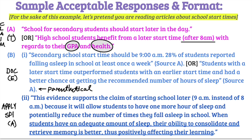If you have a document that supports the GPA claim and another document that supports the health claim, those are your two documents needed to get the points. For evidence using the documents: 'secondary school start time should be 9 a.m. — 28% of students reported falling asleep in school at least once a week (Source A).' Another example: 'students with a later start time outperformed students with an earlier start time and had a better chance at getting the recommended number of hours of sleep (Source A).' But now that we've used Source A, we can't use it as our second document — no double dipping.